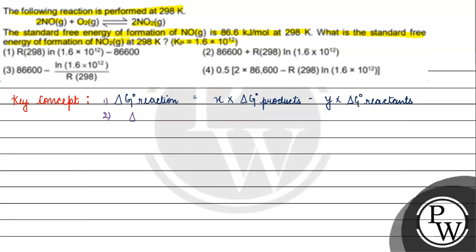We also have that ΔG° is basically equal to −RT ln Kp. So ΔG° of reaction = −RT ln Kp = stoichiometric coefficient of products × ΔG° of products minus stoichiometric coefficient of reactants × ΔG° of reactants.